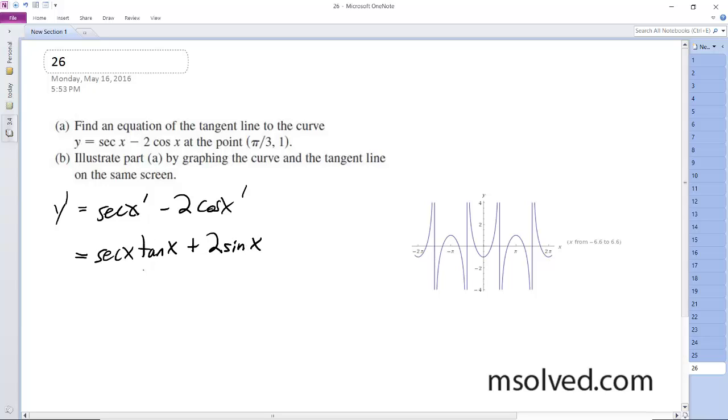So we plug in π/3, we plug in π/3 for x, the secant of π/3 times the tangent of π/3, plus 2 times the sine of π/3, we end up with 2 times square root of 3, plus 2 square root of 3 over 2.